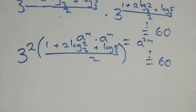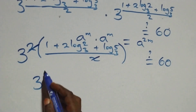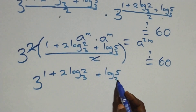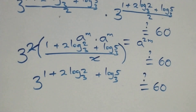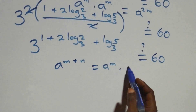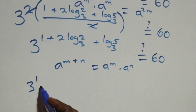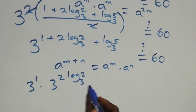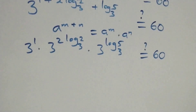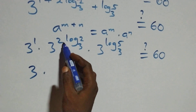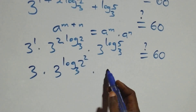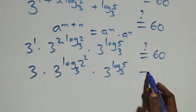The two in the power multiplies and cancels the denominator two, leaving three raised to the power one plus two log two base three plus log five base three equals sixty. Applying the law a raised to power m plus n equals a to the m times a to the n, this becomes three raised to the power one, times three raised to power two log two base three, times three raised to power log five base three equals sixty. This simplifies to three raised to power log two squared base three, times three raised to power log five base three equals sixty.